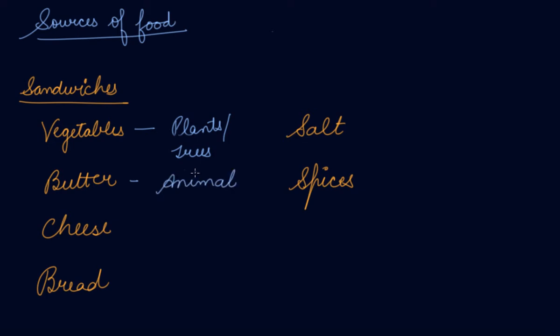Same with cheese - you get it from animal's milk. If I say bread, you get it from plants. You get the flour, white flour, then you convert it and make it into bread. Salt you get from sea or ocean, spices